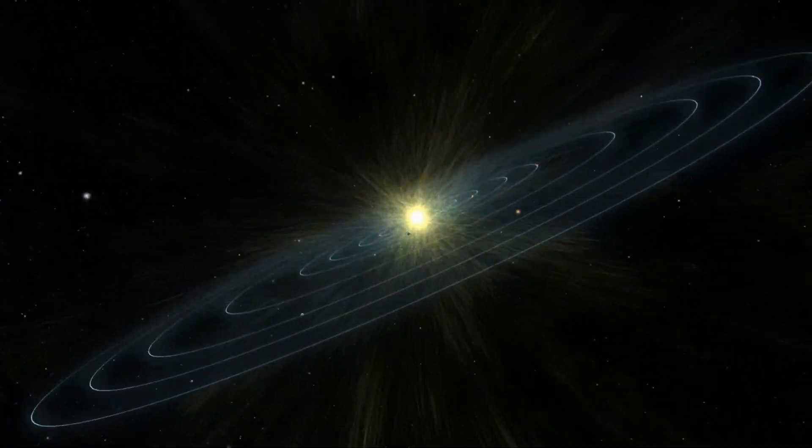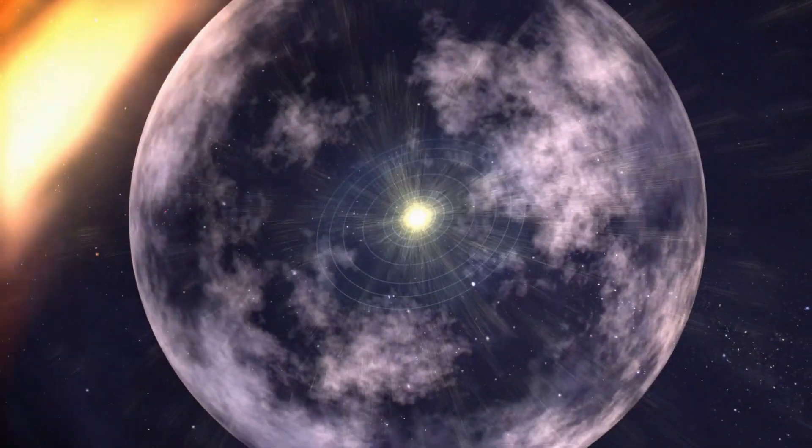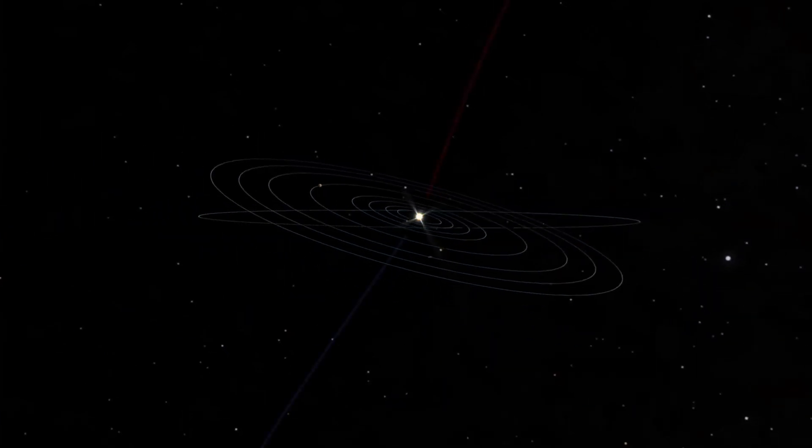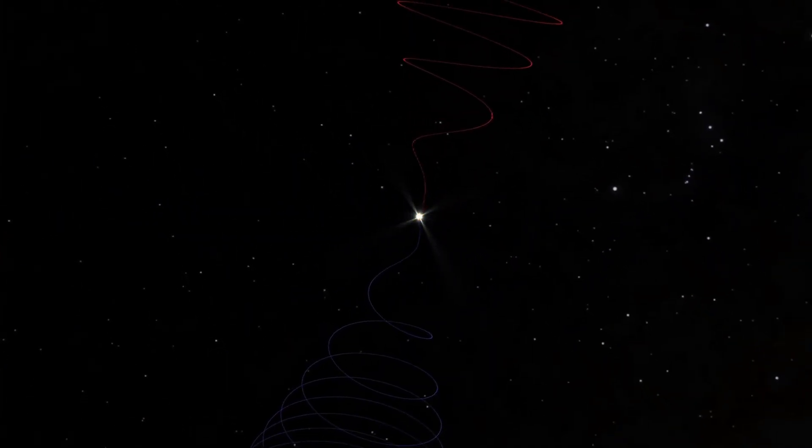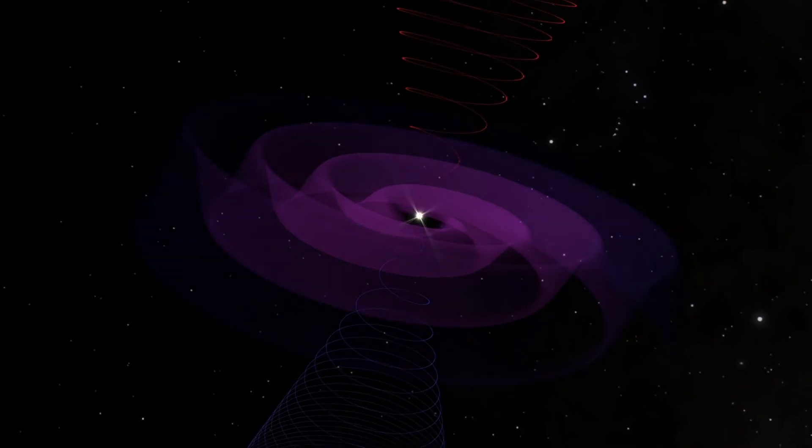You see, the edge of the solar system isn't a wall. It's not a point on a map. It's a vast, invisible frontier, made not of stone or ice, but of energy, solar wind, magnetism and radiation.